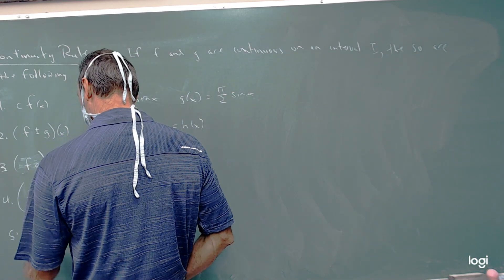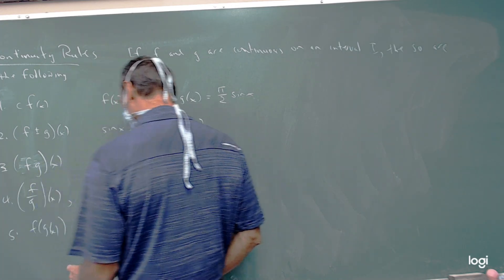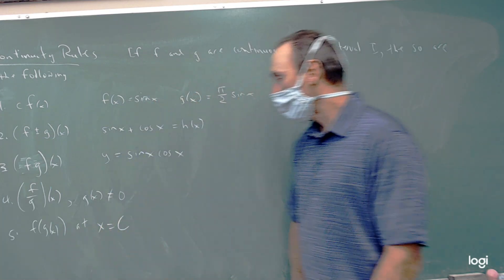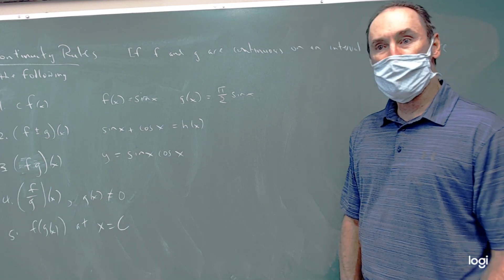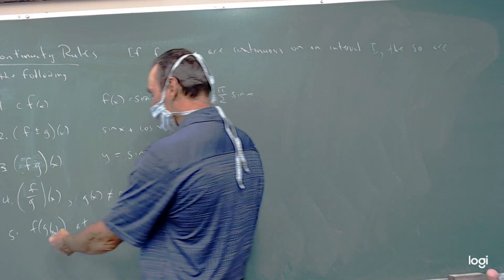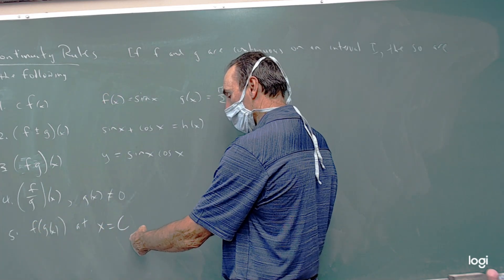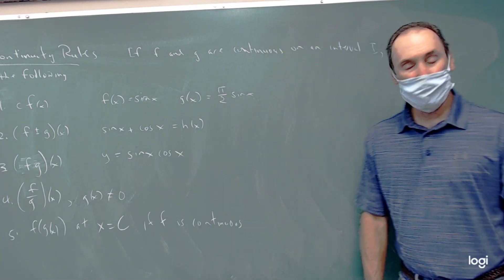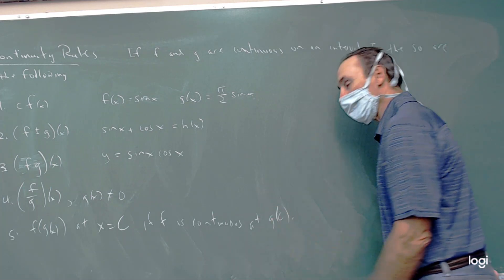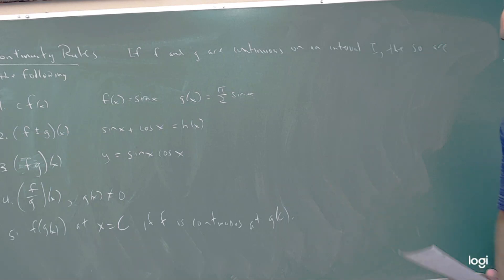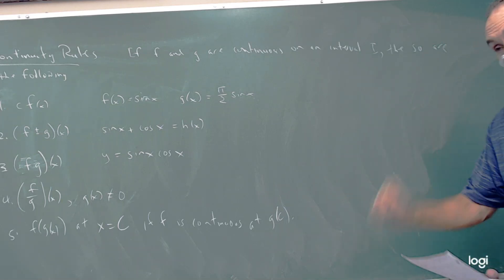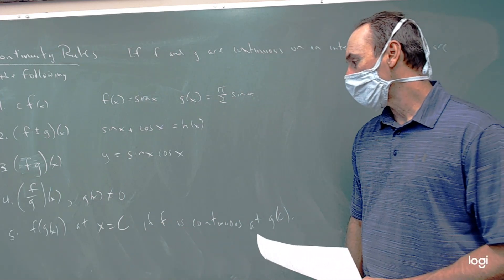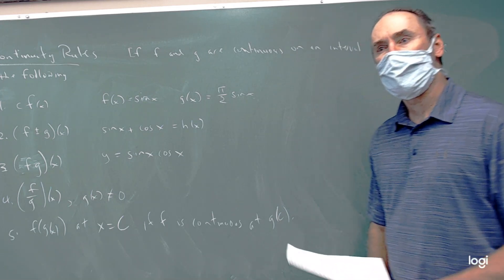And probably the most interesting one is the composition f of g of x. This will be continuous at x equals c if g is continuous at c, and also if f is continuous at g of c, because that's what's going to be input into f. There are some really tricky, deep-thinking questions on these that AP has made available, so I'll try to find some of those because there's a lot to be learned in trying to sort through that whole composition.